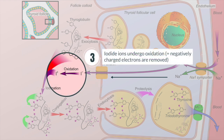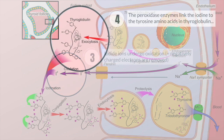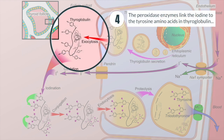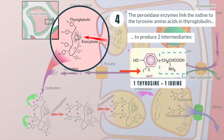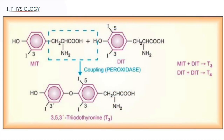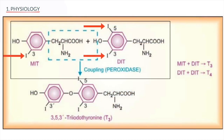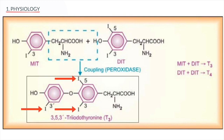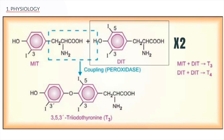Iodide ions then undergo oxidation, which means that their negatively charged electrons are removed. The peroxidase enzymes then link the iodine to the tyrosine amino acids in tyroglobulin to produce two intermediaries: a tyrosine attached to one iodine and a tyrosine attached to two iodines. When one of each of these intermediaries is linked by covalent bonds, the resulting compound is T3, a tyrosine hormone with three iodines. Much more commonly, two copies of the second intermediary bond, forming T4, a tyrosine hormone with four iodines.